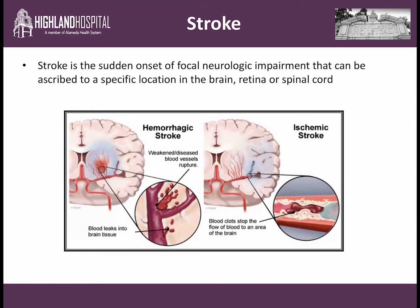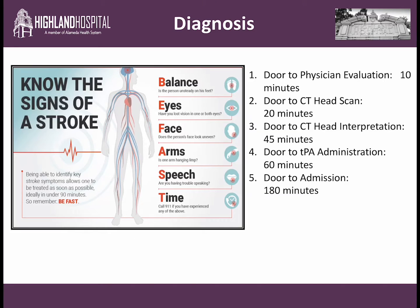It is important to make the distinction between hemorrhagic and ischemic stroke because the cornerstone of treatment in select patients with ischemic stroke is giving IV thrombolytics within three hours of onset of symptoms. We do not give IV thrombolytics in patients who have had a hemorrhagic stroke.